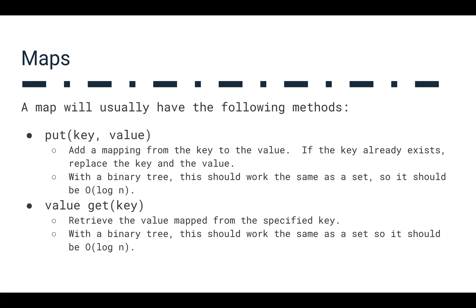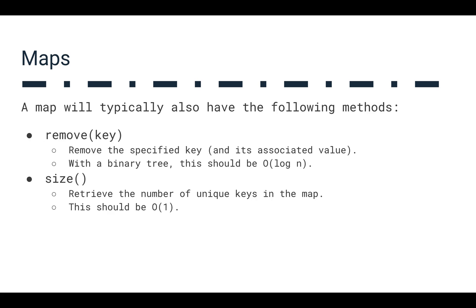A map's methods include put: we add a mapping from a key to a value. If the key already exists, we replace the key and value. With a binary tree, put should be O(log N), similar to add in a set. We also have get, which retrieves the value associated with a given key — also O(log N). Remove takes off the key-value mapping from the tree — also O(log N). Size should be O(1) if we're smart about keeping count.